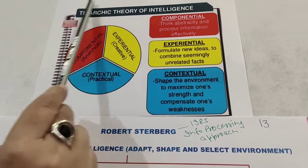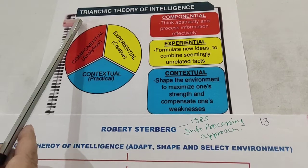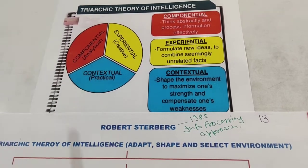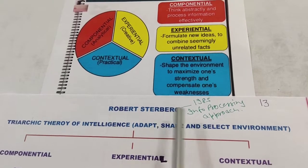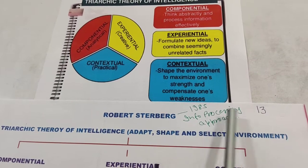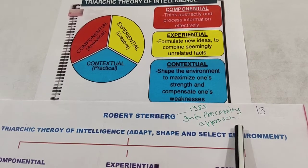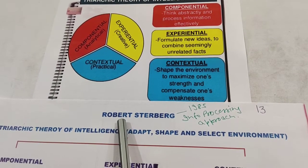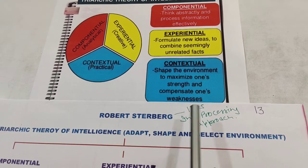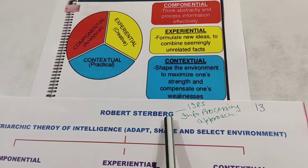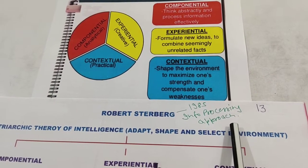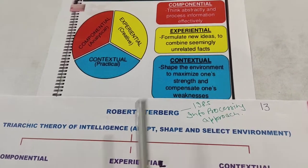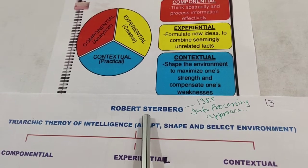The name 'triarchic' includes 'tri,' meaning three — we will study three aspects of intelligence. This theory was given by Robert Sternberg in 1985. This is basic information to keep in mind for objective-type questions. The theory is based on the information processing approach, and Sternberg says that intelligence has three types.